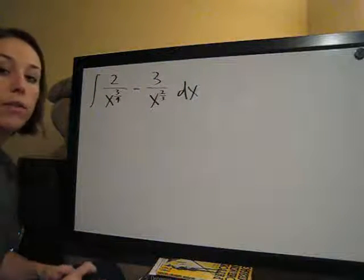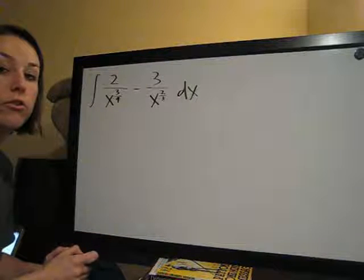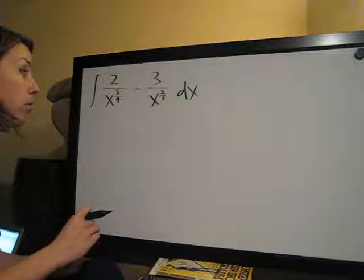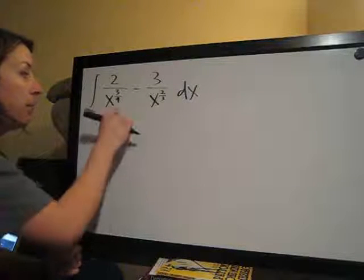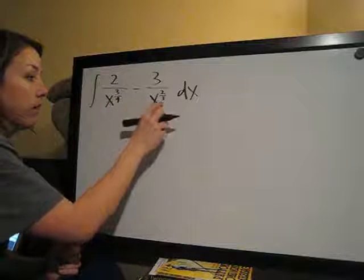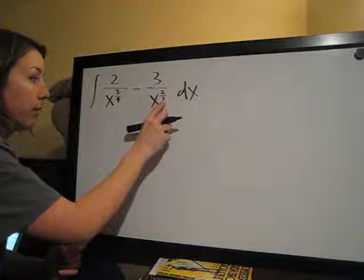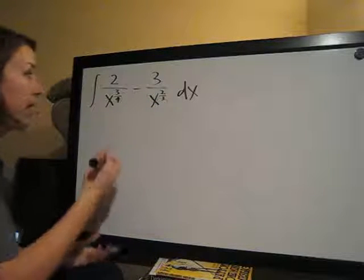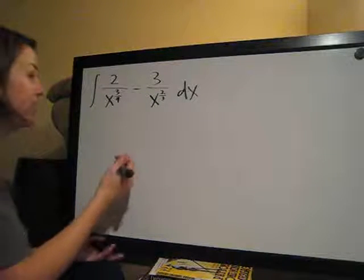The first thing we're going to do is convert this to non-fractions, since fractions are difficult to deal with in an integral. The way that we're going to do that is by moving the denominators to the numerator and flipping the signs on these exponents from positive to negative. That's just a rule that you can apply. I demonstrated that in previous videos.